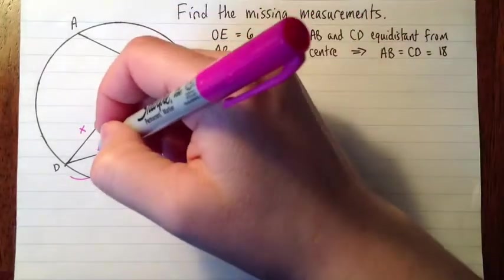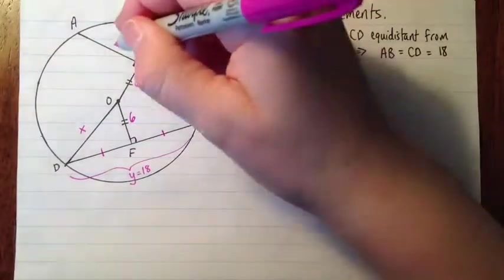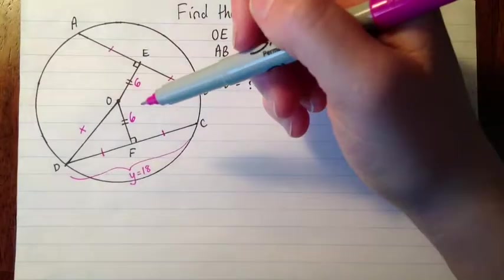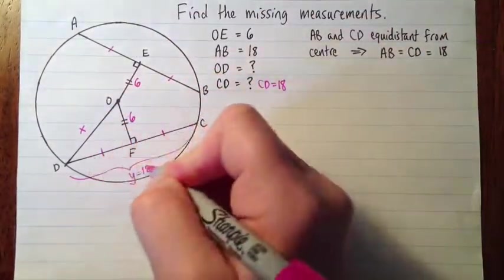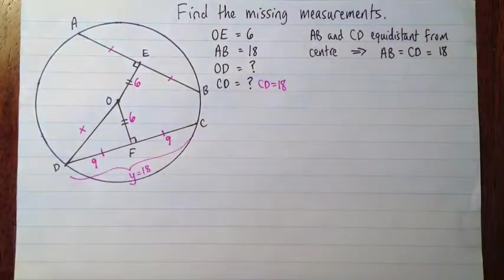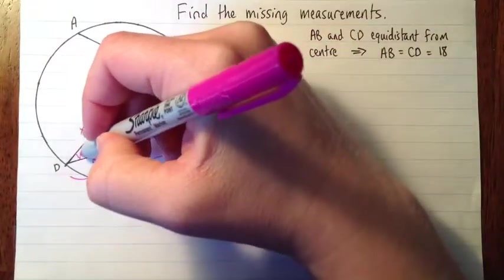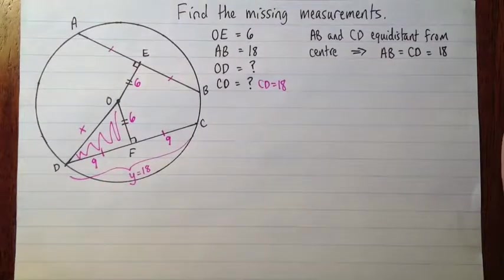So that means these two things here are equal. For the same reason these are equal, although we're not actually going to need that. Okay, so if these are both equal, that means they're both 9, because they're half of 18. And so that's actually the key thing there, because now in this triangle we can use Pythagorean theorem to find the length of X.